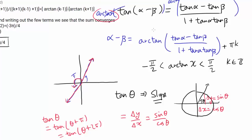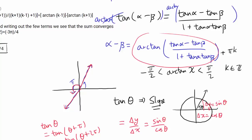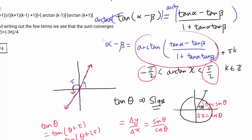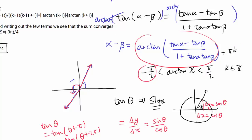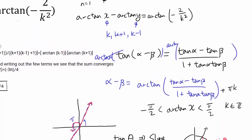So when we take arctangent and get alpha minus beta as arctangent of this expression, alpha minus beta has the same tangent value, but arctangent only outputs values between negative pi over 2 and pi over 2. Just in case alpha minus beta is larger than pi over 2 or smaller than negative pi over 2, we must put in the correction plus pi times k. As we're about to see, for our particular case the correction is in fact 0.